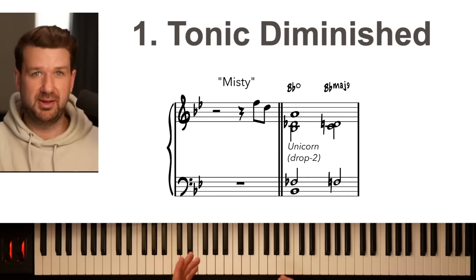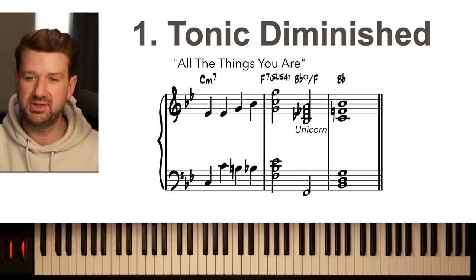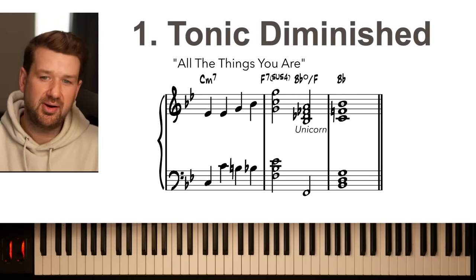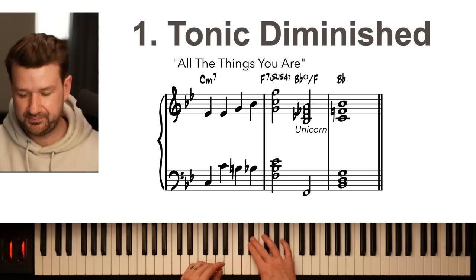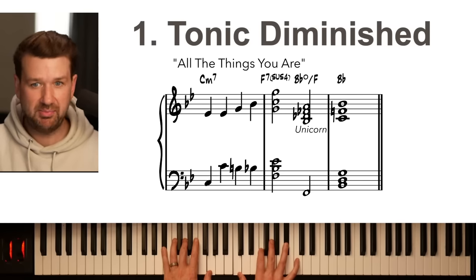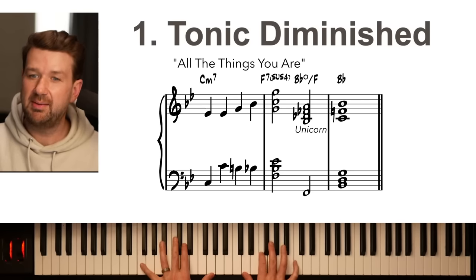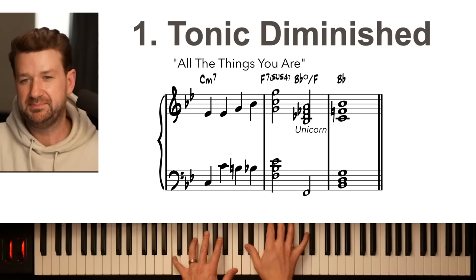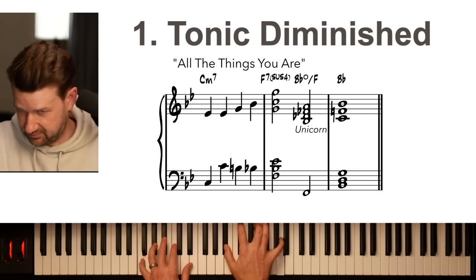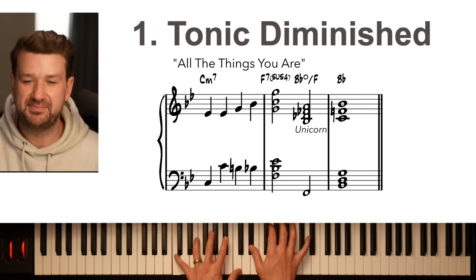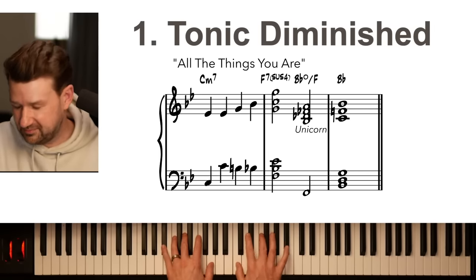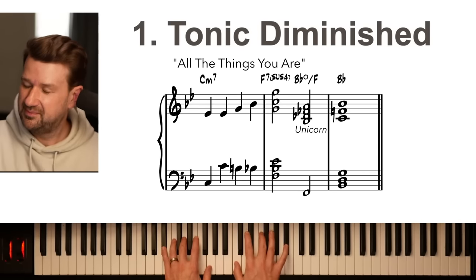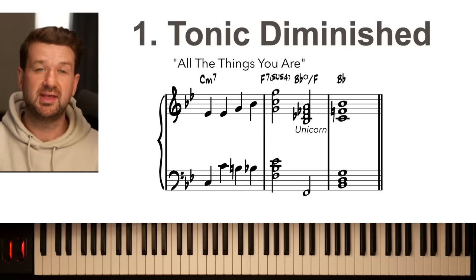One more very cool use of this tonic diminished is actually as a dominant chord over the five of whatever key you're in. Here in 'All The Things You Are' in the key of B-flat, you might play just an F7 with an A on top as the melody, but listen to how it sounds as the unicorn chord — the tonic diminished resolving unto itself. I mean it's just gorgeous. So there it is — our first example, the tonic diminished.